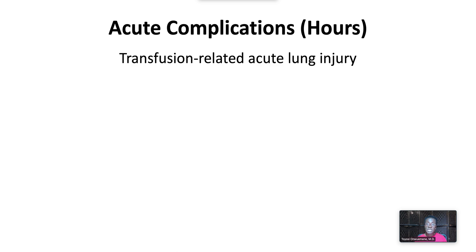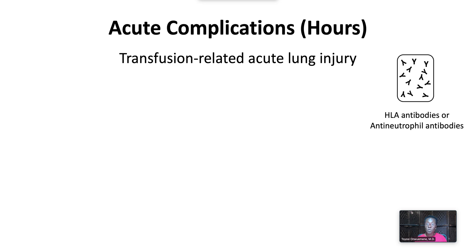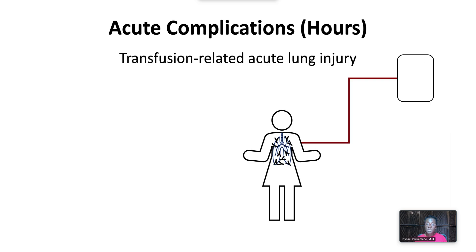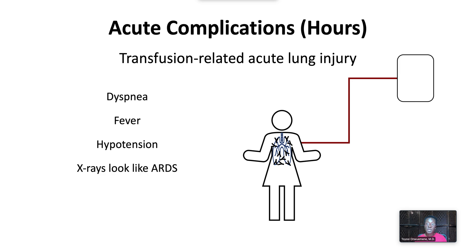Transfusion-related acute lung injury occurs due to HLA or antineutrophil antibodies present in donor plasma. Once transfused, these antibodies bind to and activate recipient leukocytes in the pulmonary vasculature, causing non-cardiogenic pulmonary edema within six hours of transfusion. Symptoms are dyspnea with hypoxemia, fever, and hypotension without signs of volume overload. Radiographic findings look like acute respiratory distress syndrome. To reduce TRALI, blood banks exclude high-risk donors.